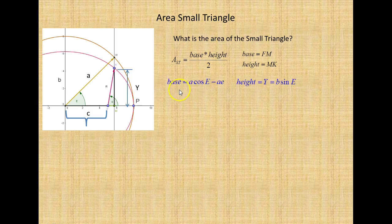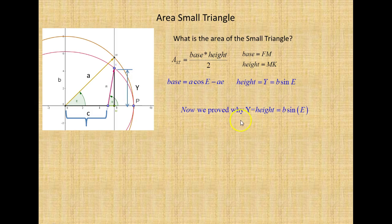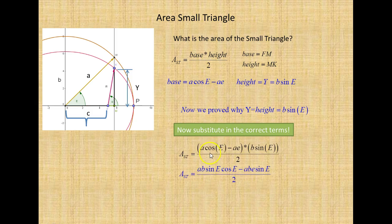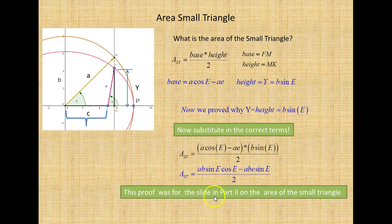Now what is the area of the small triangle? We have the base equal to A cosine E minus AE, and the height is B sine E, from trigonometry. We've now proved why Y, the height, equals B sine E. Substituting in the correct terms for the area: area equals one half times (A cosine E minus AE) times B sine E. This proof was for the slide in Part 2 on the area of the small triangle — a shortcut I shouldn't have taken.